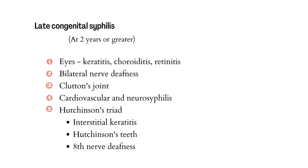An exclusive feature here is Hutchinson's triad. In Hutchinson's triad we find Hutchinson's teeth — present in early congenital syphilis — along with interstitial keratitis and eighth nerve deafness. These are the features of early and late congenital syphilis.